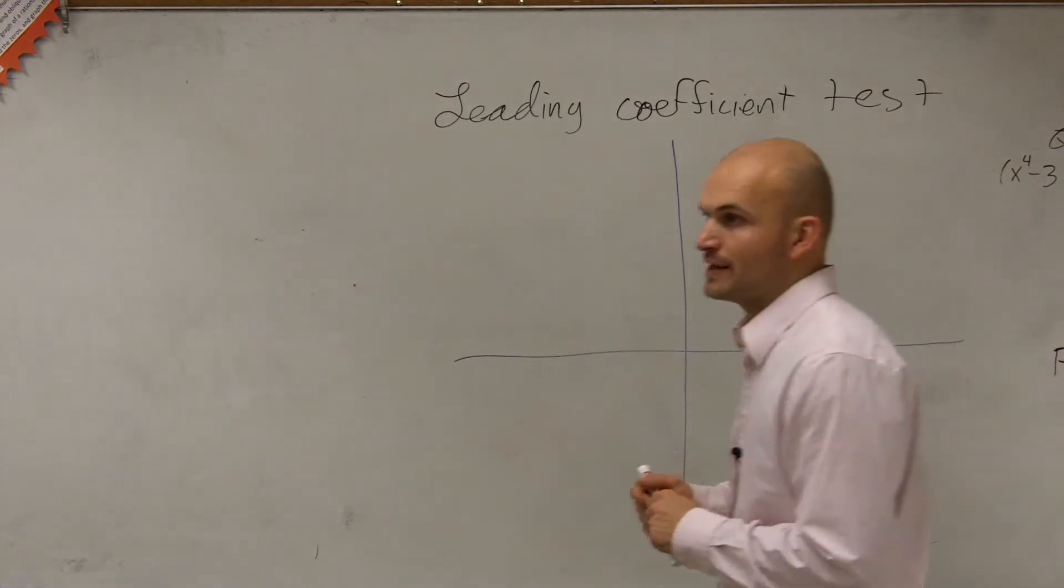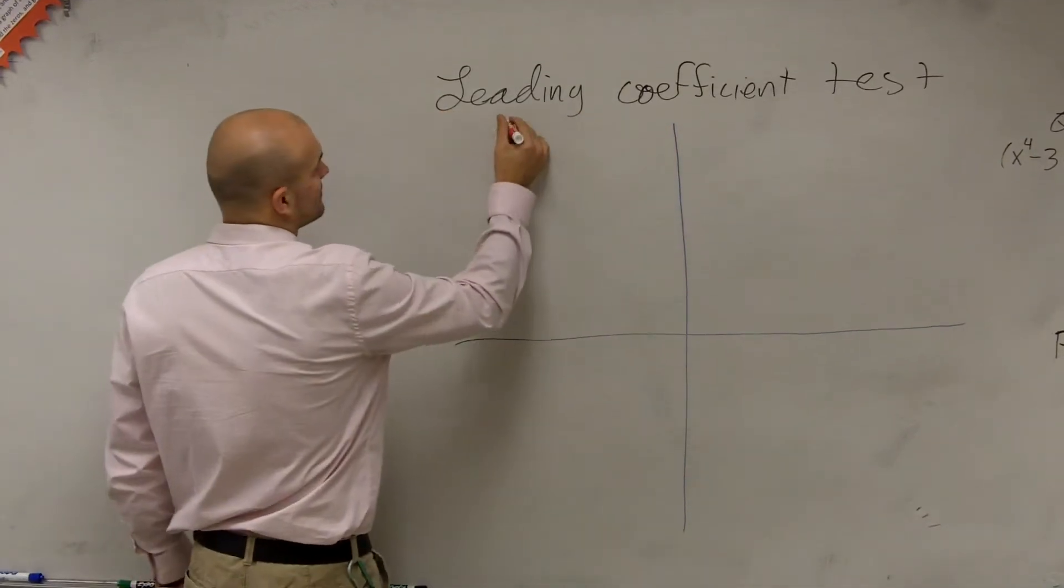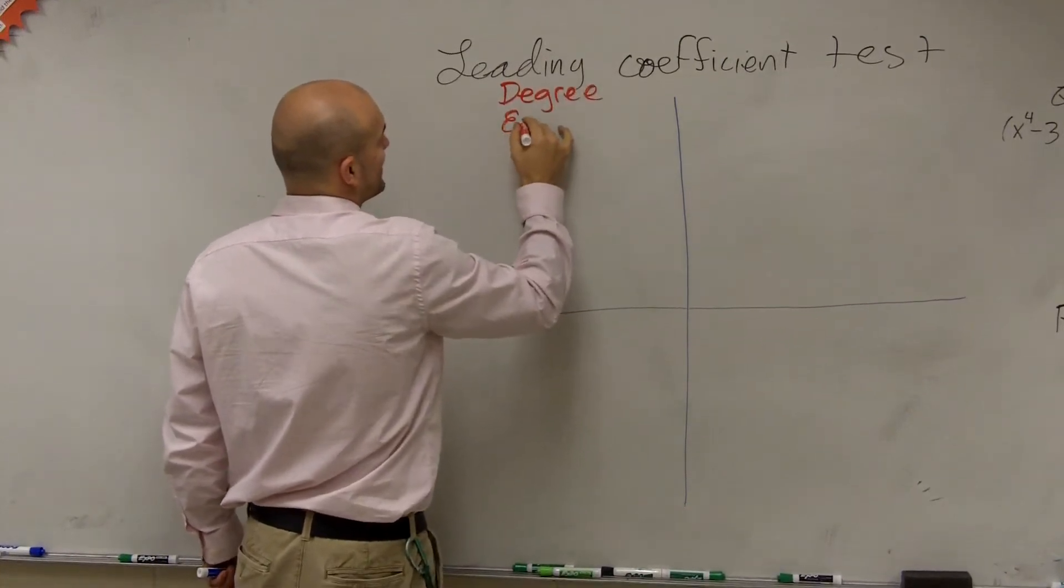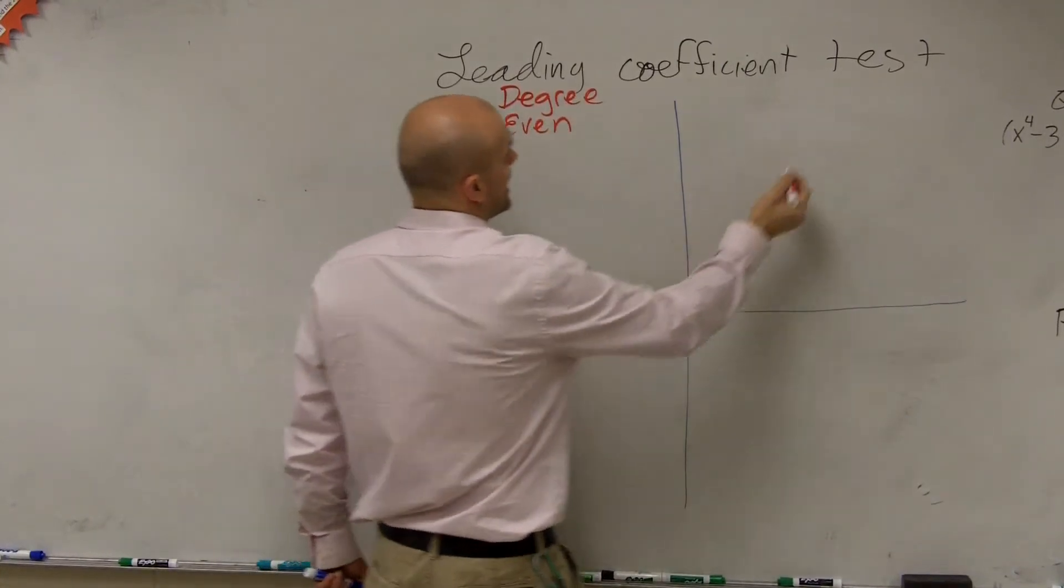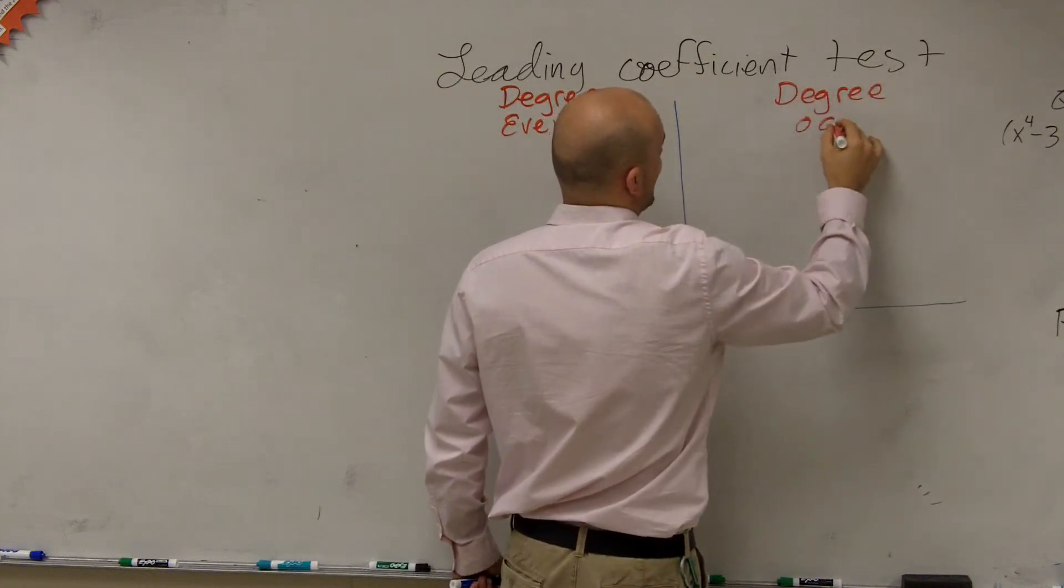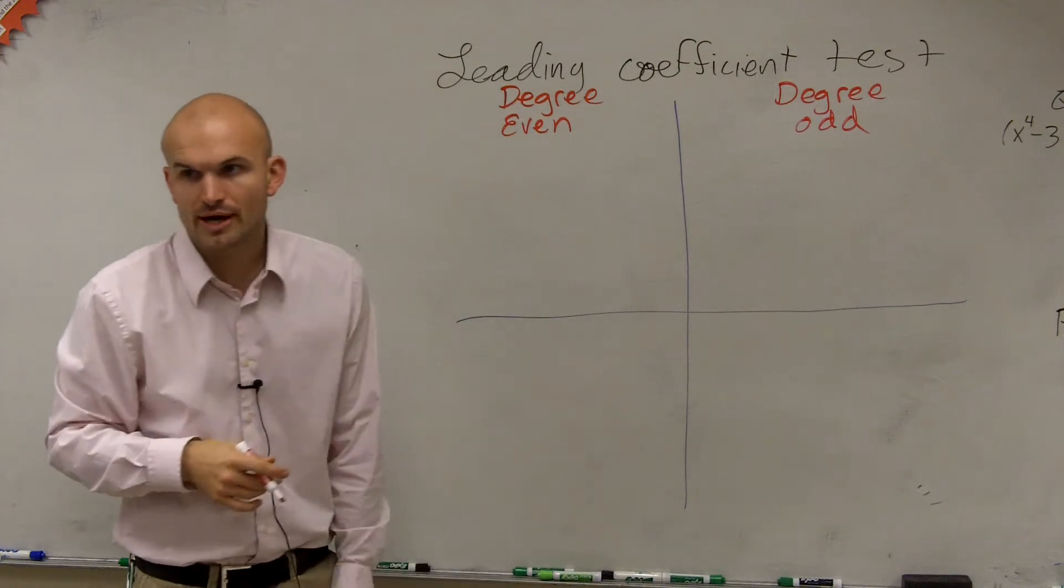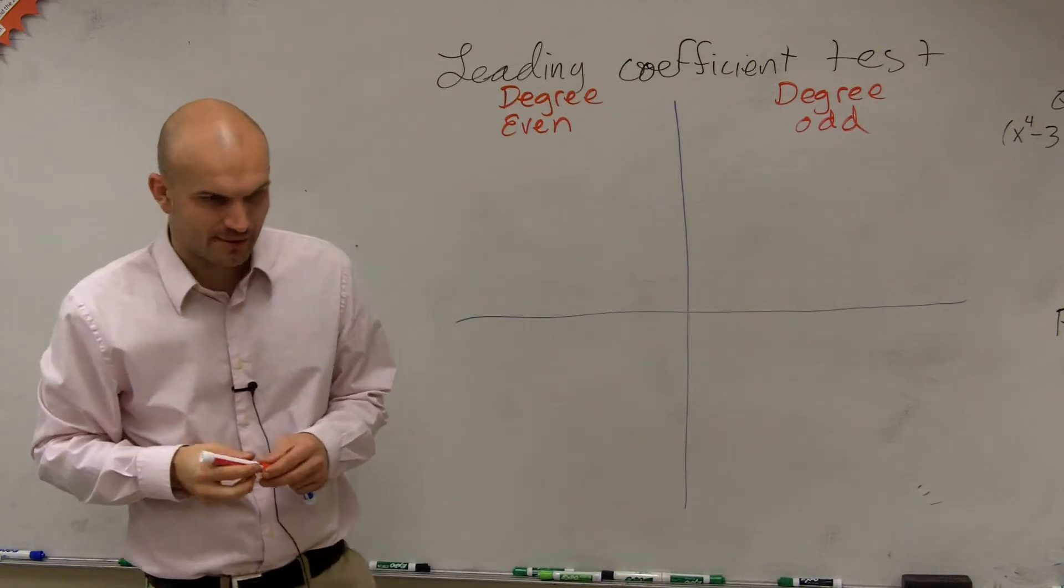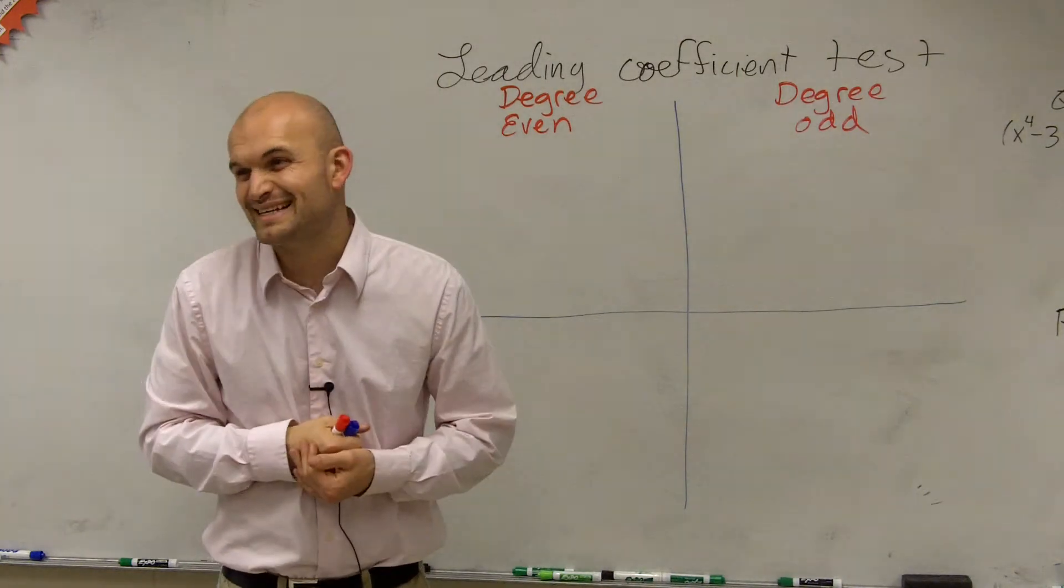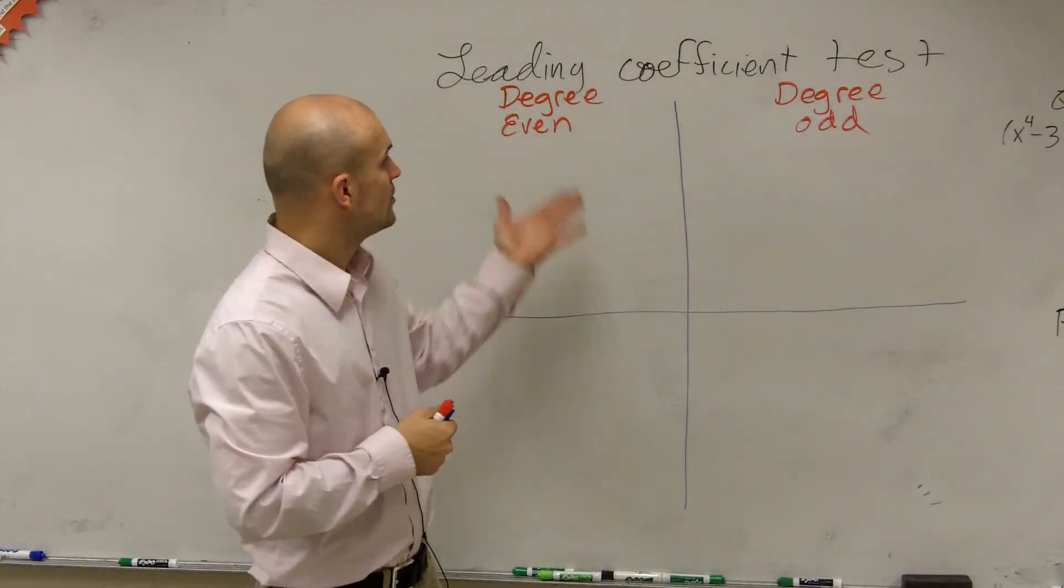It's also going to include the degree of your polynomial. So the first thing we want to do is talk about when your degree is even and when your degree is odd.